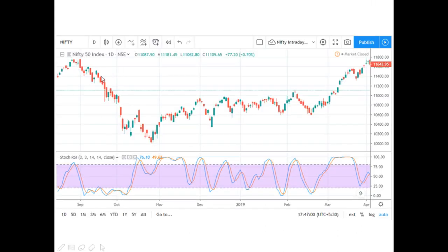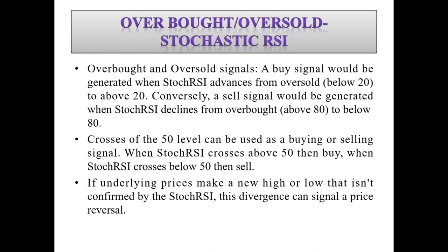Once applied, you can see how the Stochastic RSI looks on the stock chart — the blue line here is the Stochastic RSI. You can also use crosses of the 50 level as buying or selling signals: when the Stochastic RSI crosses above 50, you can buy; when it crosses below 50, you can sell. Additionally, if the underlying price makes a new higher low not confirmed by the Stochastic RSI, this divergence can signal a price reversal.